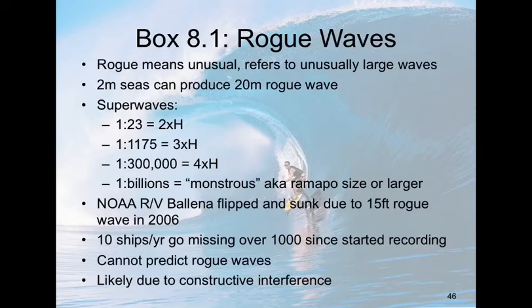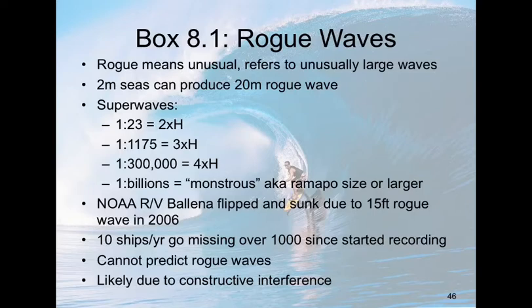Rogue waves — everybody loves rogue waves. When we have a rogue wave, we're talking about an unusually large wave. It's an understood rule that it's about ten times the average height. So if your significant wave height is 2 meters, then to be considered a rogue wave it would have to be 20 meters. Very rarely we get what are called super waves, and here are the ratios for how often they occur.